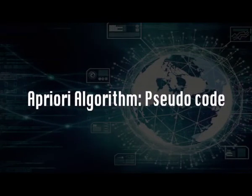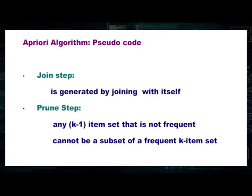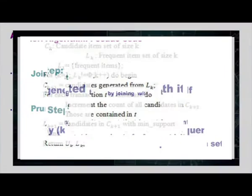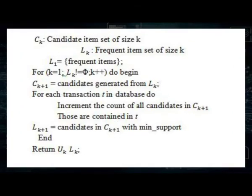The Apriori algorithm has two main steps: the join step and the prune step. In the join step, candidate item sets are generated by joining with themselves. In the prune step, any k−1 item set that is not frequent cannot be a subset of a frequent k-item set. Candidate item sets are represented as Ck and frequent item sets as Lk. A loop is used to go through the transactions and generate only the frequent item sets.